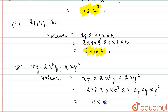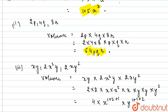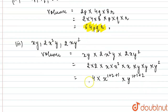Since the bases are the same and in multiplication, the exponents get added: x^(1+2+1) and y^(1+1+2). So we get 4x⁴y⁴. This is the volume for the third part.